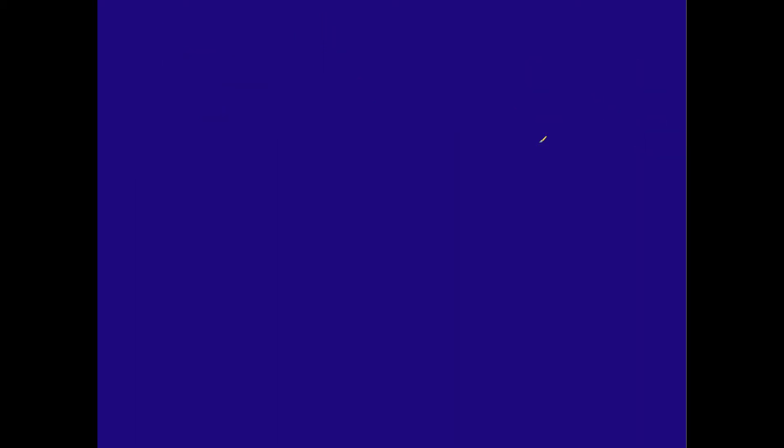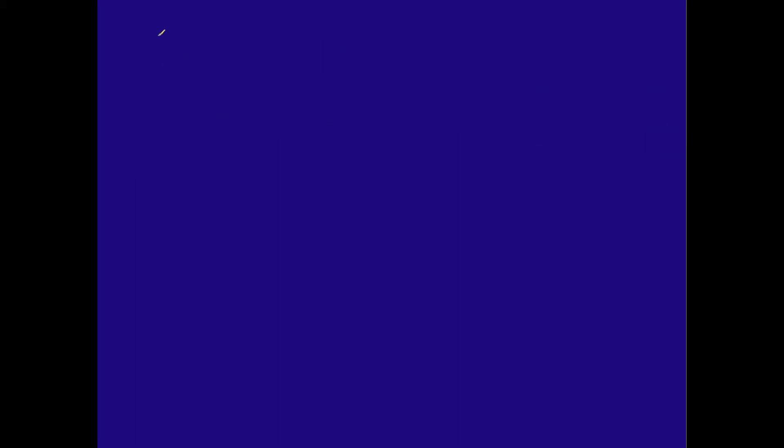Let me go ahead and go to the next slide here. So I'm going to write 6 over 12 plus 8 over 12, all that over 10 over 12 plus 1 over 12. And so I just simplify this. I end up with 14 over 12 over 11 over 12. That's what I get.